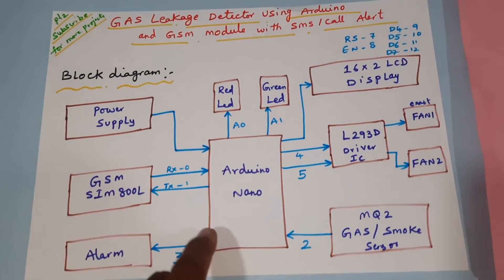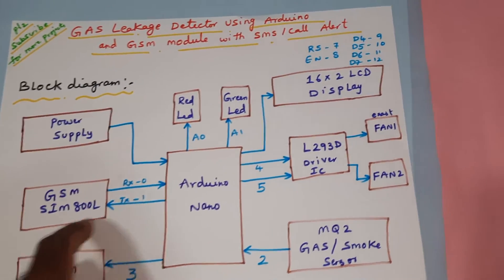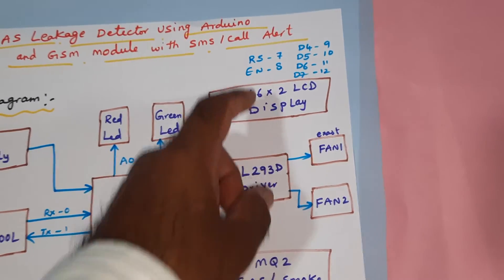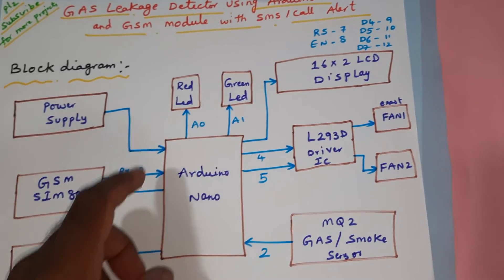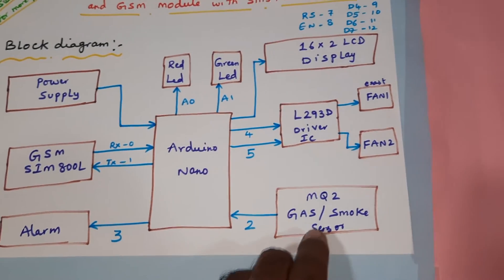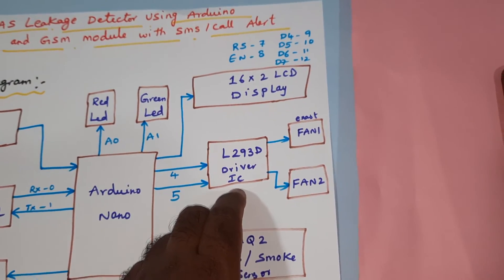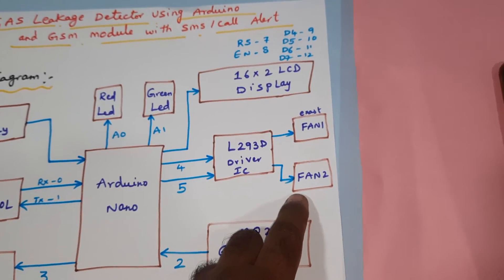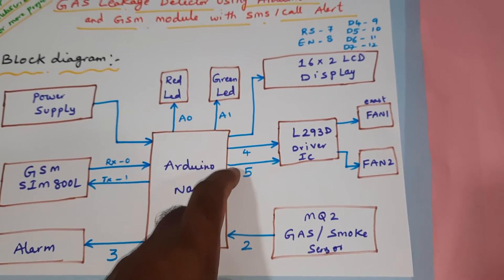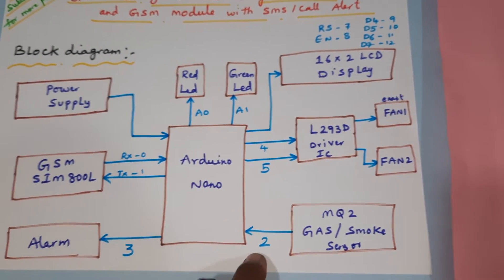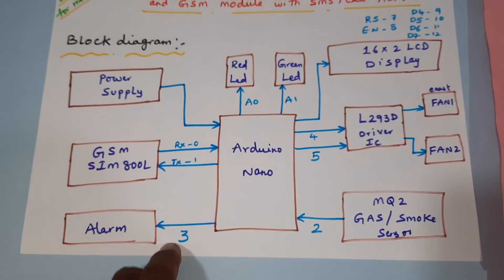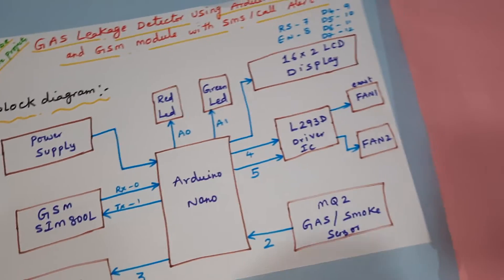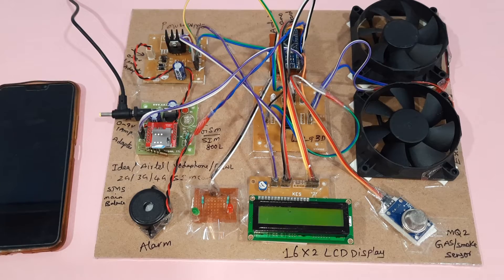We are using BSNL SIM cards to get SMS alert as well as missed call alert. Components include a 16x2 LCD display, RS enabled with pins D4, D5, D6, D7 on pins 7 through 12, ready LED, green LED, alarm, MQ2 gas sensor, smoke sensor, L293D driver IC, two exhaust fans connected to pins 4 and 5. MQ2 gas sensor is connected to pin 2, alarm to pin 3, GSM to pins 0 and 1, red LED and green LED to A0 and A1.